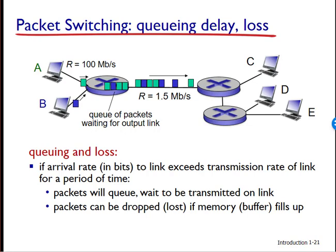Output buffers play a key role in packet switching. If an arriving packet needs to be transmitted onto a link but finds that the link is busy — perhaps transmitting another packet — the arriving packet must wait in the output buffer. In addition to store-and-forward delays, packets suffer output buffer queuing delays. These delays are variable and depend on the level of congestion on the network. Since buffer space is finite, an arriving packet may find the buffer completely full, in which case packet loss will occur — either the arriving packet or one of the already-queued packets will be dropped.